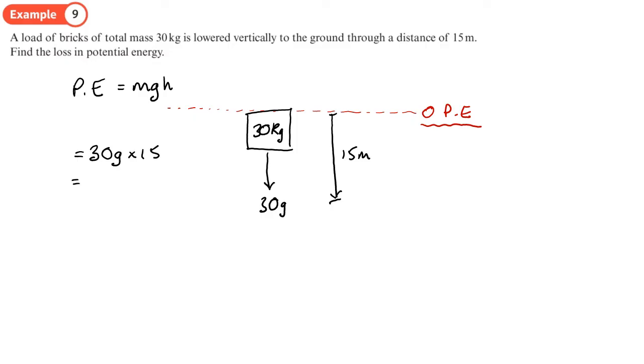We do mgh, so mgh equals 30g times 15, which gives 450g in joules. That's the loss in potential energy. 450 times 9.8 gives 4410 joules, so there's our loss in potential energy.